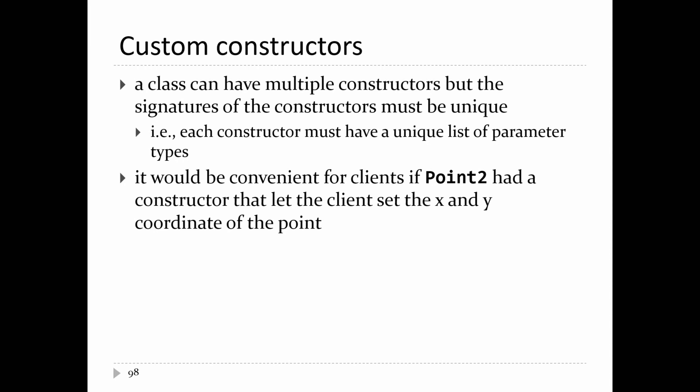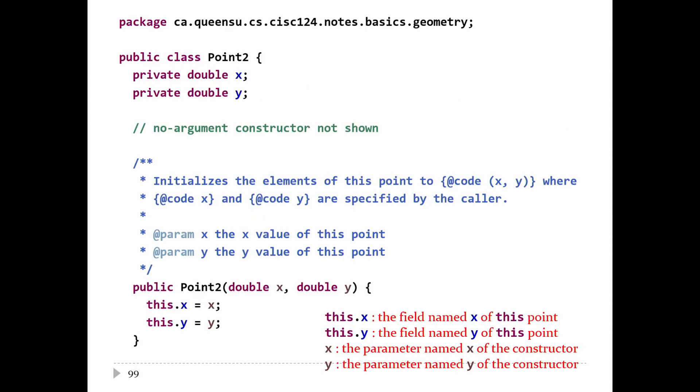Why do you want multiple constructors? As people who are using your class, they probably want to initialize their objects to some state they want to define. If you're using a point class, in many cases you know what the coordinates are — you'd like to make a point with those coordinates. You don't always want 0,0. For example: I want to set the point to 1 and minus 5. So to make it nice for your users, just provide an extra constructor.